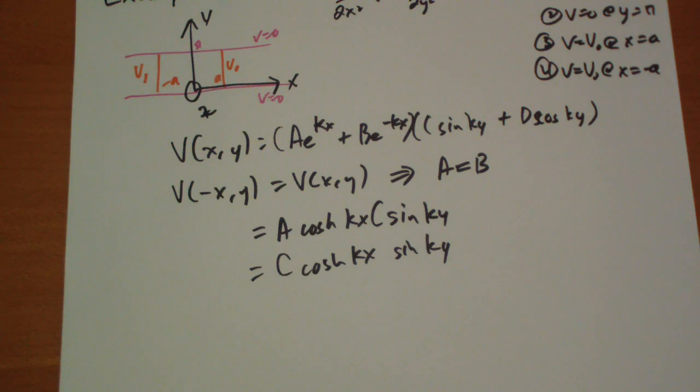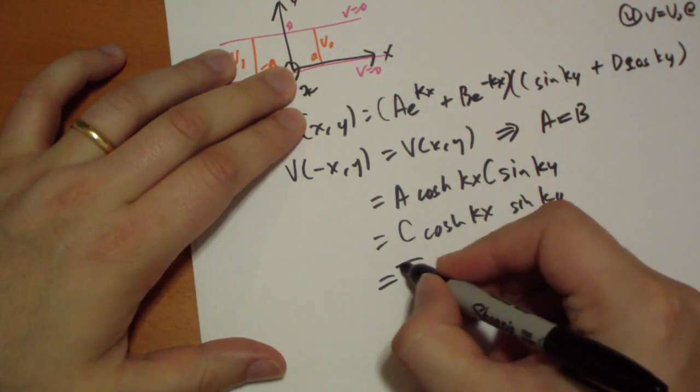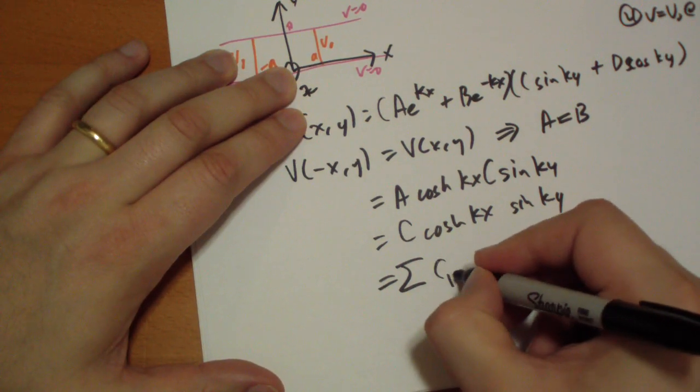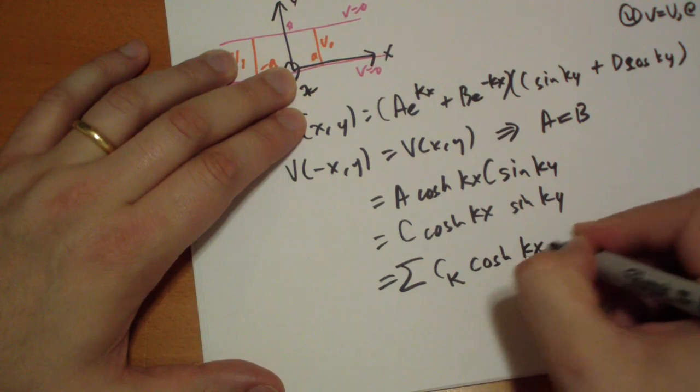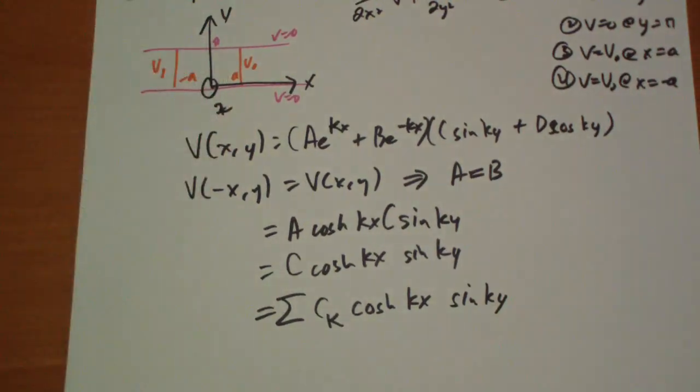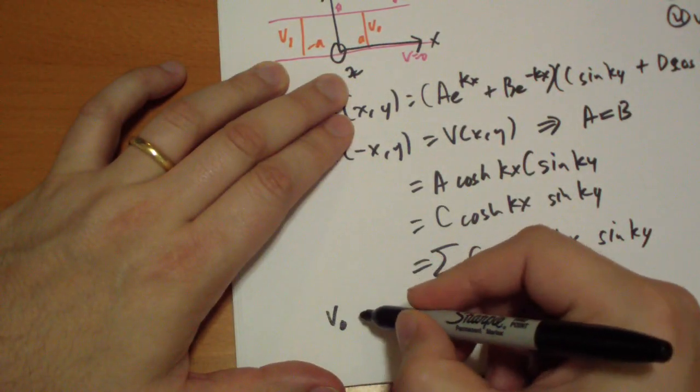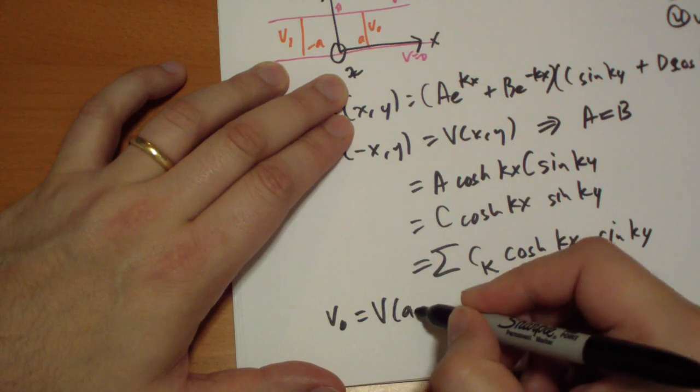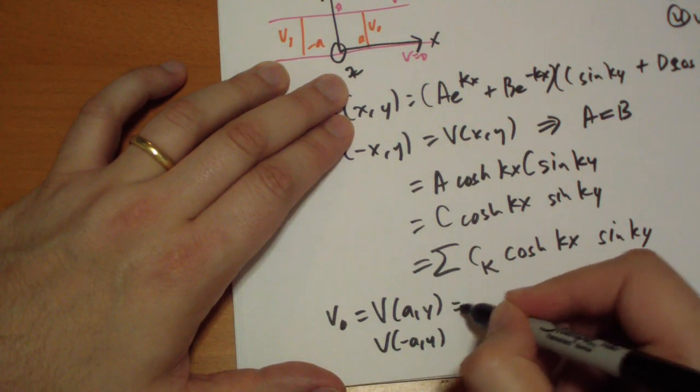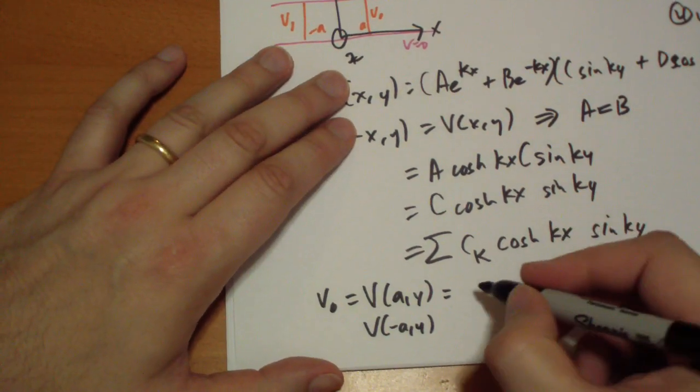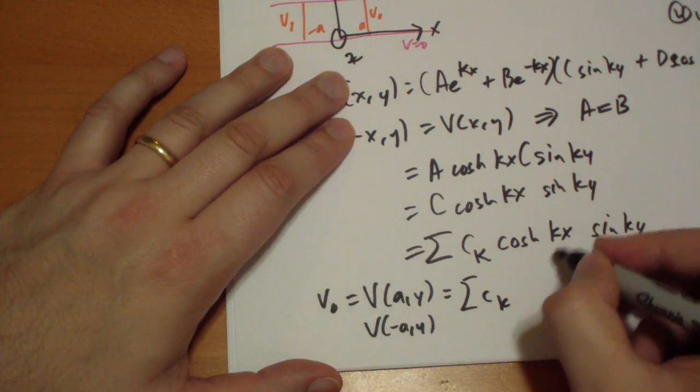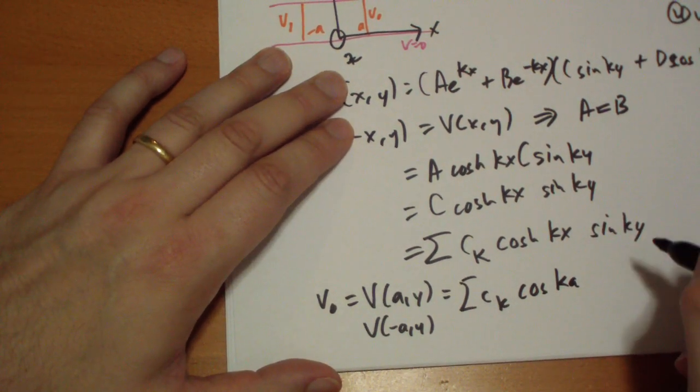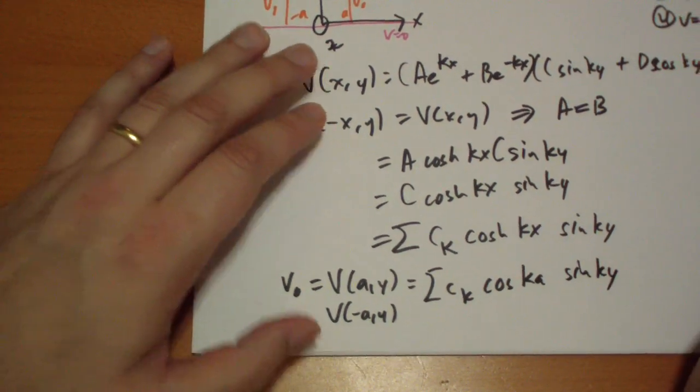So, the total solution is actually a sum. So it's equal to sum of all the k's, c k cosh kx and sine of ky. And how are we going to pick the coefficients? We use Fourier's trick. So we end up with v-naught has to be equal to v of a comma y, or v of negative a comma y, because they're equal to each other. Which will give us the sum of c k, let's see, the cosh of k a, times the sine of ky.